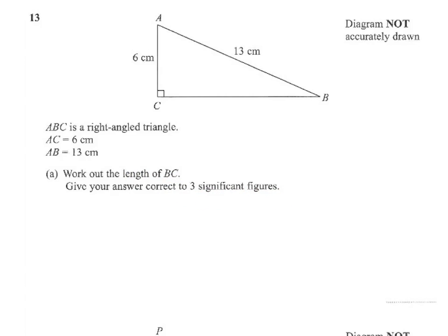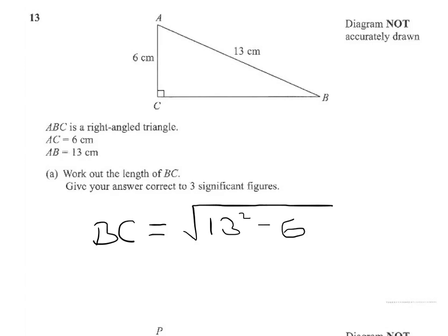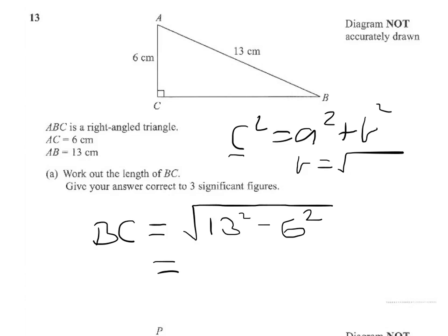What we're going to need to do here is: BC equals the square root of the large side squared subtract the small side squared. It comes from the formula C squared equals A squared plus B squared. What I've done is rearranged the formula to say that B equals the square root of C squared minus A squared. So we need to put this through a calculator.